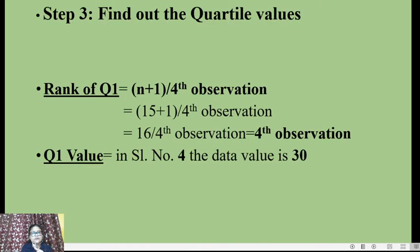We will find the quartile values one by one. First, the rank of Q1 = (n + 1) / 4 = (15 + 1) / 4 = 16 / 4 = the 4th observation. In the arranged data, at serial number 4, the value is 30. So Q1 = 30.